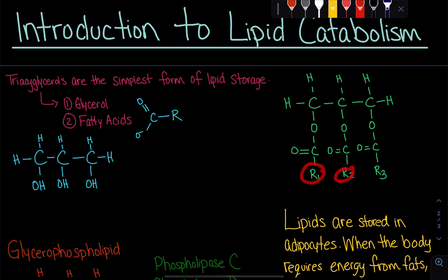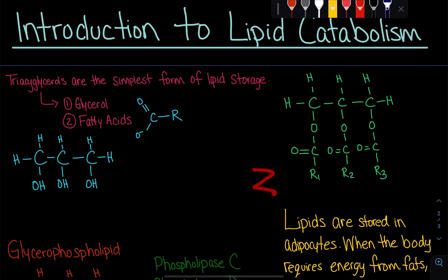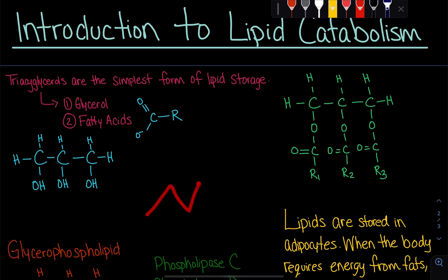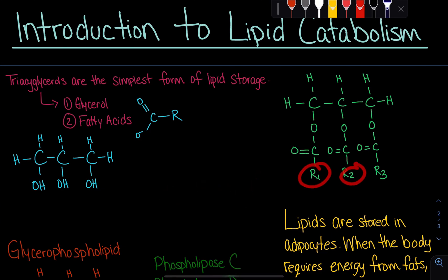In the general structure of a triacylglycerol, R1, R2, and R3 simply means we can have whatever hydrocarbon chain — any number of carbons, double bonds, even cis double bonds. So R1, R2, and R3 can represent a wide variety of fatty acid chains.